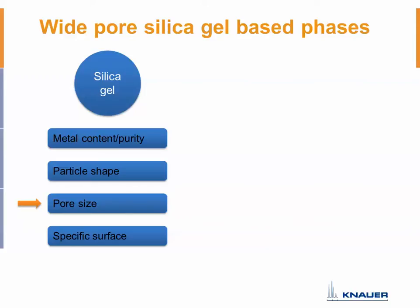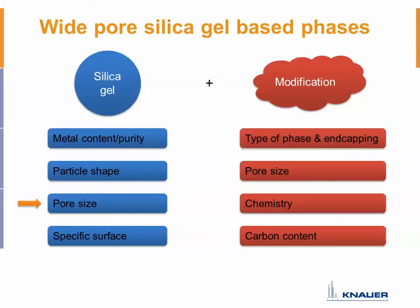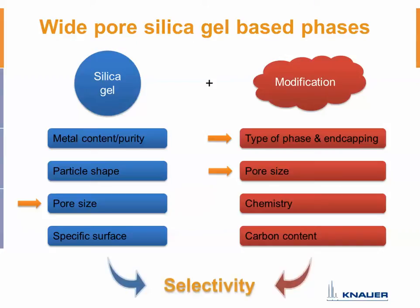Remember, 300 angstrom pores is typical when we talk about wide-pore silica gel. The modification brought onto this bare silica gel is also really important — you need to know these characteristics to get full information on the separation. The modification defines the type of phase and the end capping. More modification and longer chains on your silica gel means the pores get smaller. The chemistry of the modification defines the separation mechanism, and the carbon content is really important. All of these parameters together define the selectivity of the column.